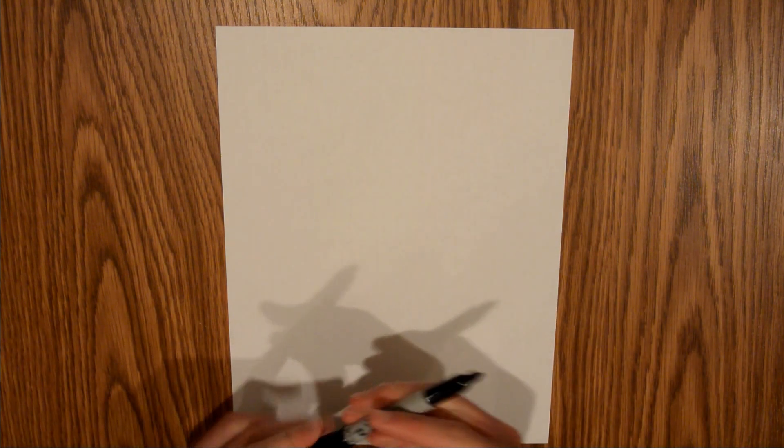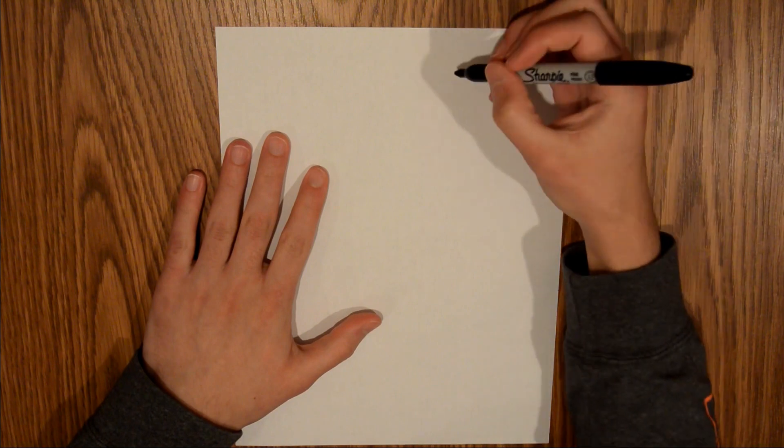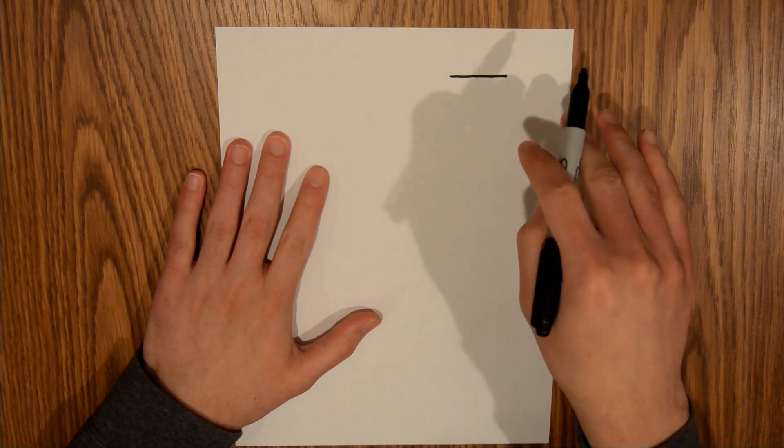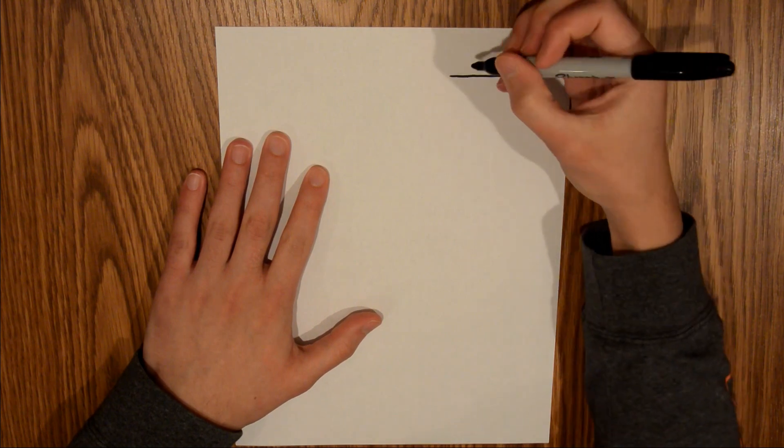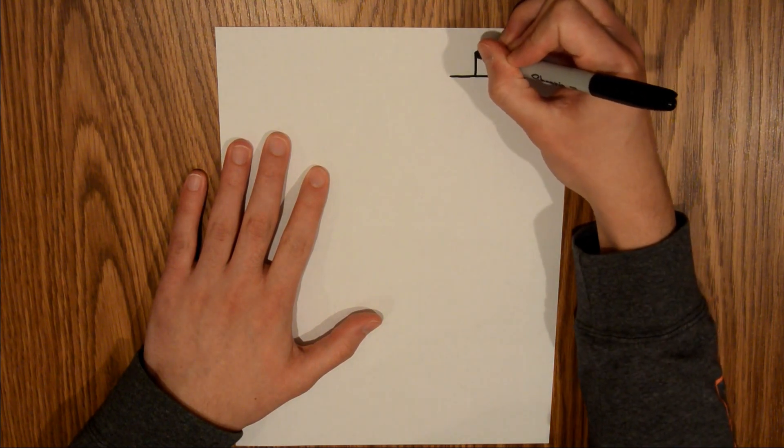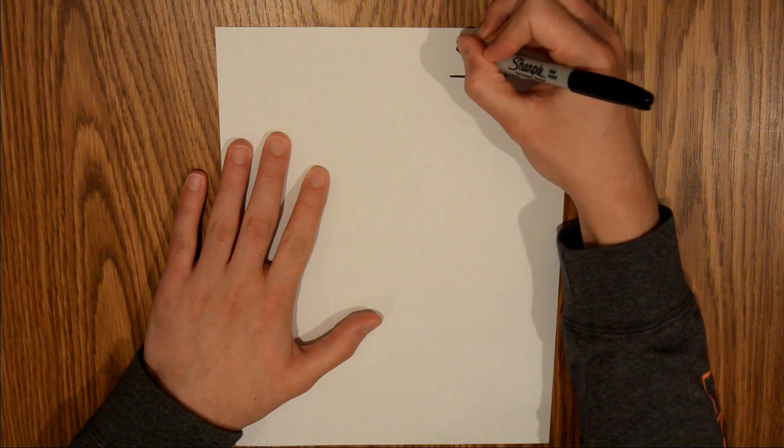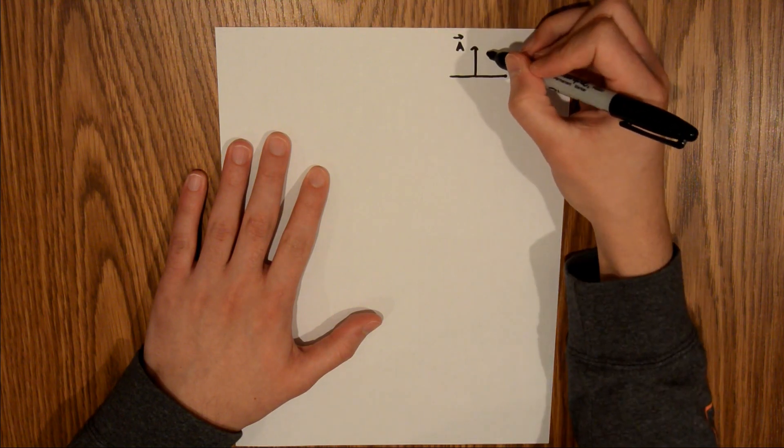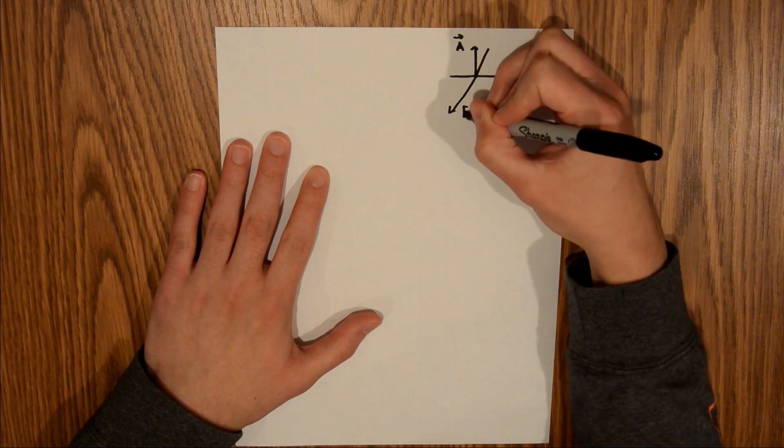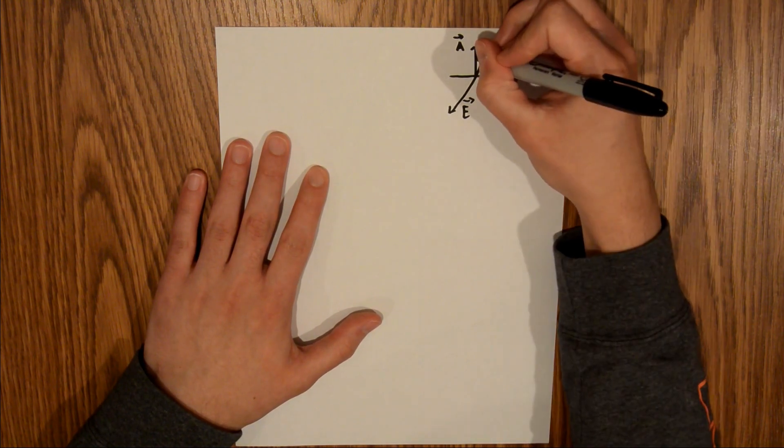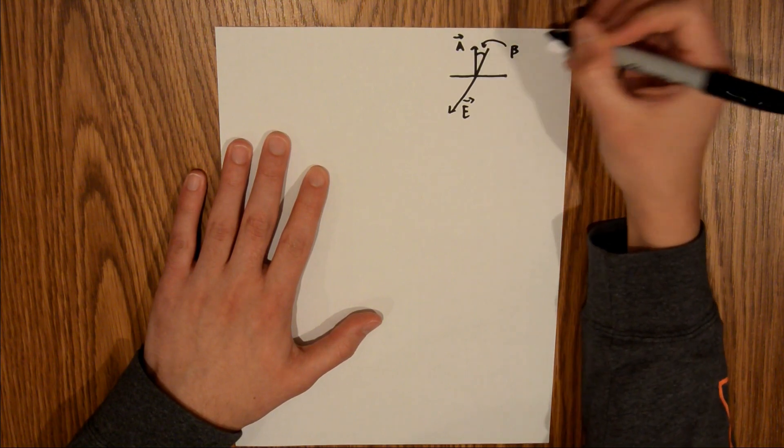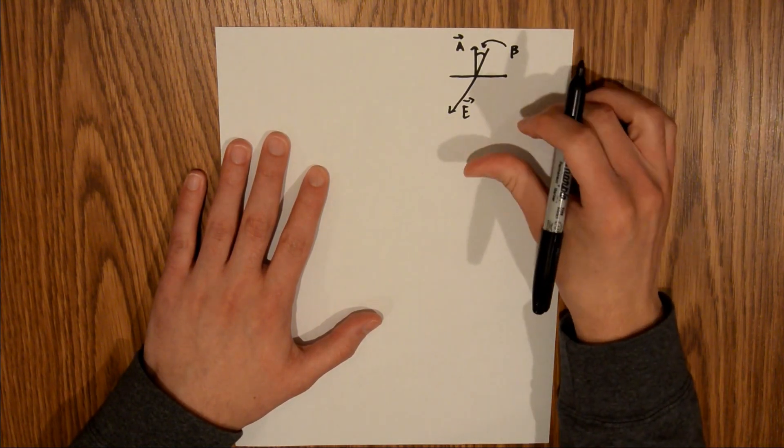The first thing I want to do is draw a diagram. This right here is our square surface, a side view of that square, and then we have an area vector that is normal to that surface, and our electric field vector, just like that. We're told what this angle is, and for now, I'm just going to call that beta. So that's the setup for this problem.